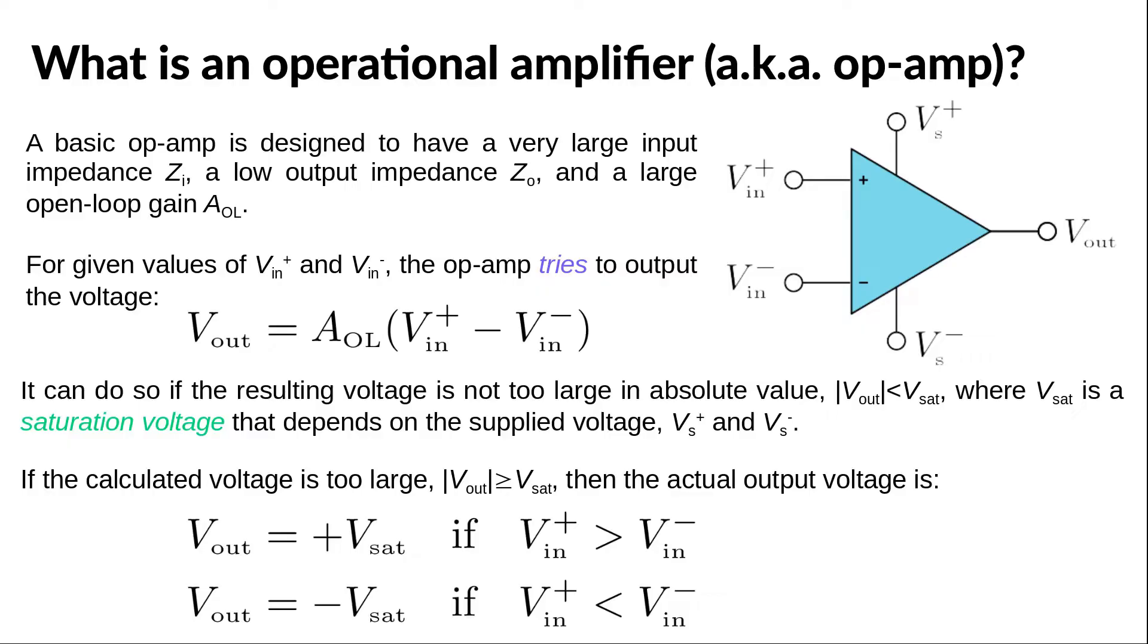This gives us the two different regimes in which the op-amp can work. We say that the regime is linear if the output voltage is proportional to the difference in the input voltages. Otherwise, the op-amp is in the saturated regime.